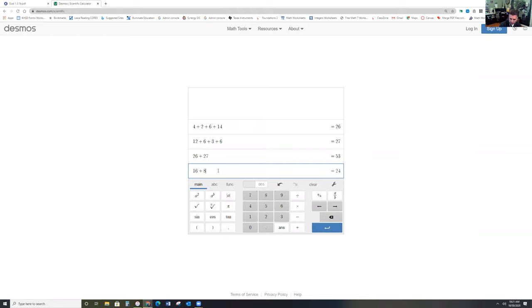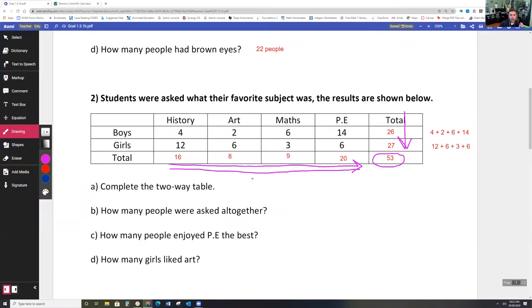Then my numbers across the bottom are 16, 8, 9, and 20. There it is, 53 twice. Okay, that's why that is the two for one special, because we can add it two different ways and get the one answer. And now we're done, we're done with completing the two-way table. Next we have to answer these questions.